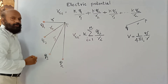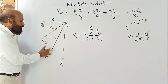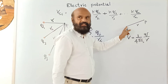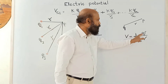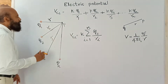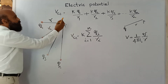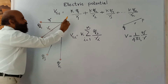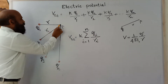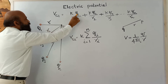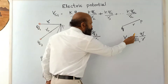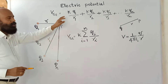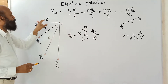Now we consider the electric potential at a point due to a system of point charges. We know the potential at a point due to a single charge: V = (1/4πε₀)(q/r). When there are multiple charges, we find the potential at the point due to each individual charge separately, then add them. The potential at point P due to charge q₁ at distance r₁ is k·q₁/r₁, where k = 1/4πε₀.